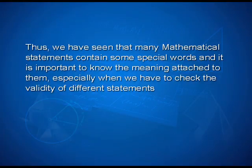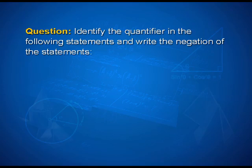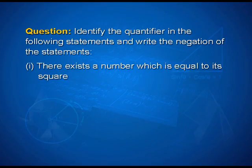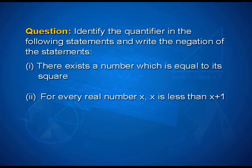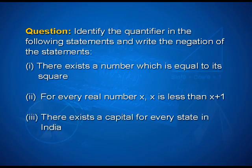We have seen that many mathematical statements contain special words, and it is important to know the meaning attached to them, especially when checking the validity of different statements. Now let us solve an example: identify the quantifier in the following statements and write the negation of each. First: there exists a number which is equal to its square. Second: for every real number x, x is less than x plus 1. Third: there exists a capital for every state in India.